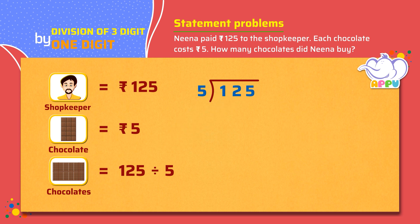Step 1: We cannot divide 1 by 5 since 1 is smaller than 5. So we consider the tens digit as well. We figure out how many fives does it take to make 12 or almost 12, which is 2.